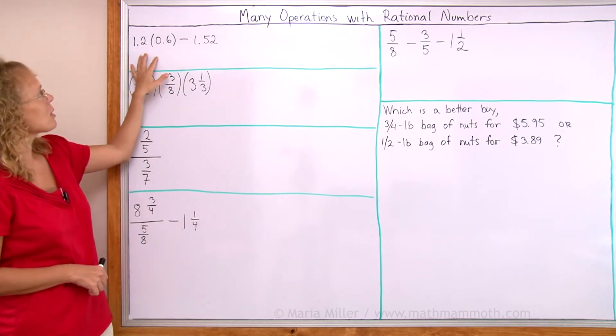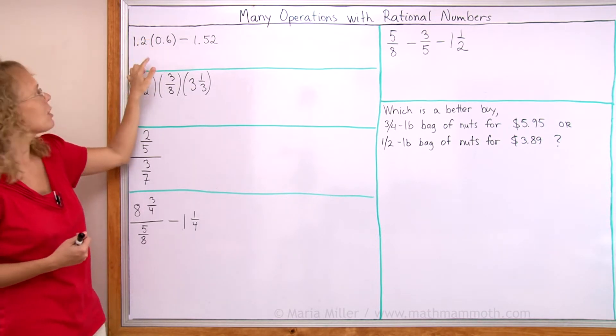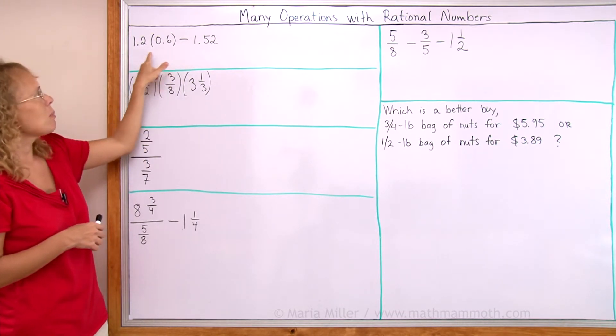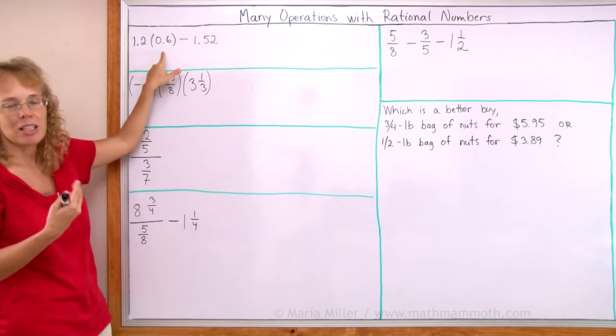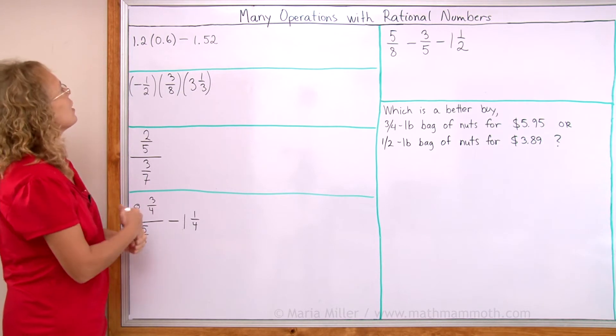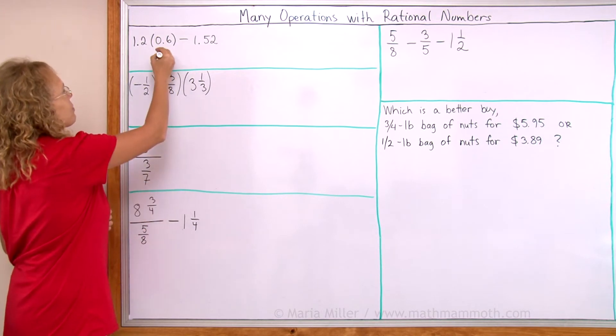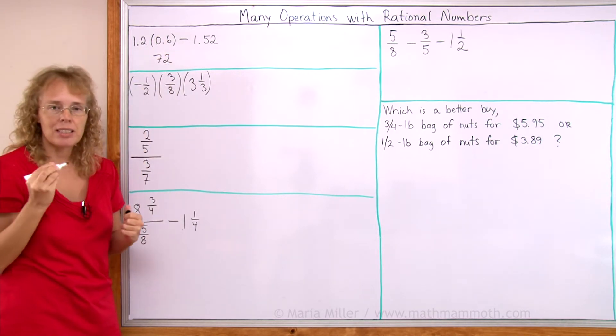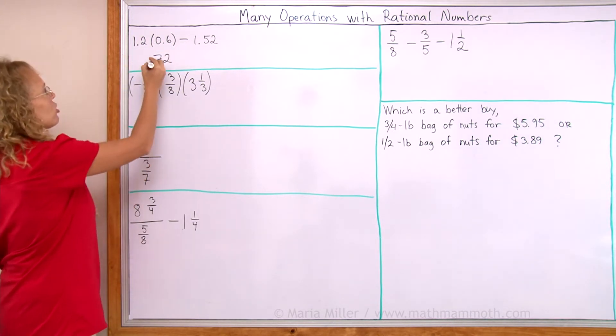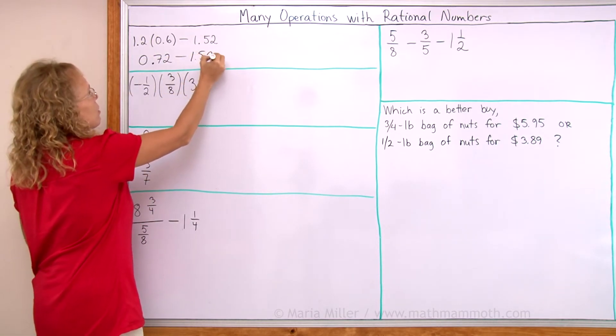This one here is decimals. There's decimal multiplication, first of all, even though it doesn't point it out. It's not written with the little cross or any other symbol because when we put the number in parentheses, then it means multiplication and then subtraction. Of course, we do the multiplication first here. And I can do that mentally. I can just multiply 12 times 6 equals 72, right? And then think about my decimal point. There's one decimal digit, one decimal digit. I need two decimal digits in my answer, therefore.